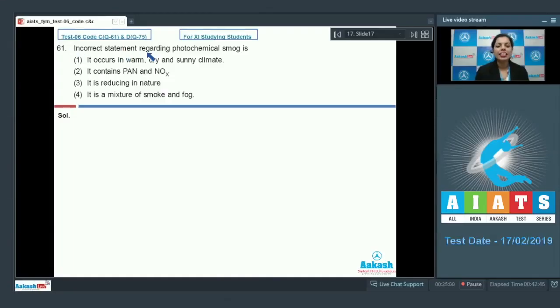Question number 61: Incorrect statement regarding photochemical smog. Let's check the statements given here. First, it occurs in warm, dry, and sunny climate - that's a correct statement. Next, it contains PAN (peroxyacetyl nitrate) and NOx (oxides of nitrogen). If we talk about photochemical smog, these two are present there, but it is reducing in nature.